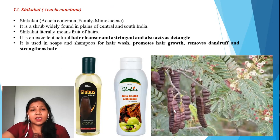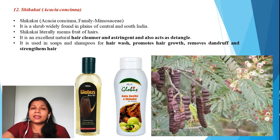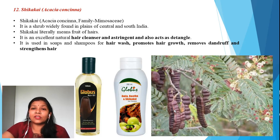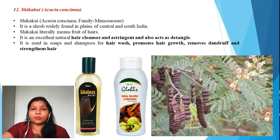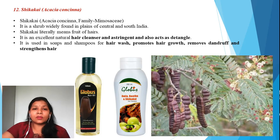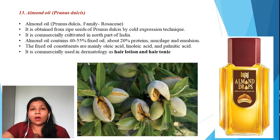The twelfth ingredient is shikakai, belonging to the family Mimosaceae. The botanical name is Acacia concinna. Shikakai has been used widely from a very long period of time. It is a shrub generally seen in central and south India. The name 'shikakai' literally means 'fruits for the hair.' It has excellent cleansing and astringent properties. After washing hair with shampoo, shikakai extract can be used as a detangler or conditioner. It can be added to hair washes, promotes hair growth, removes dandruff, and strengthens the hair.